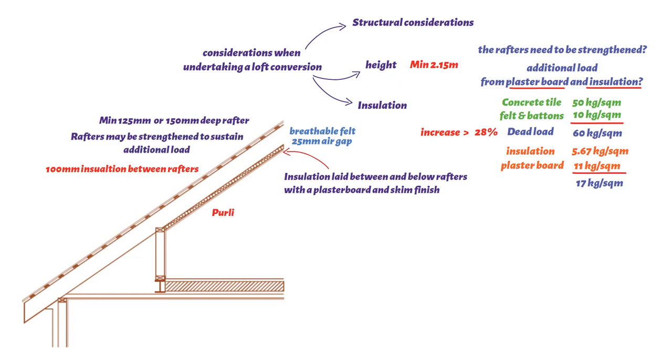The purlin will also require some structural assessment to ensure it can sustain the additional load, and be strengthened as necessary. Dormer windows may necessitate the removal or cutting of a purlin, and one option is to support the purlin from a beam at ceiling level, and create a small load-bearing stud wall between the purlin and the beam to transmit the loads to the new beam.